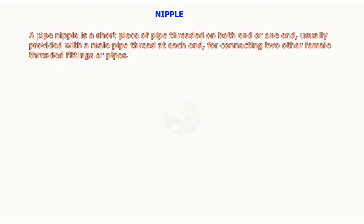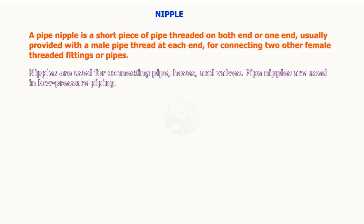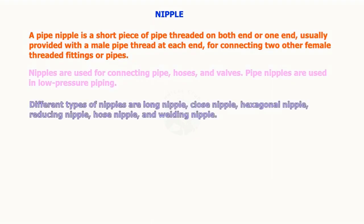A pipe nipple is a short piece of pipe threaded on both ends, or one end, usually provided with a male pipe thread at each end for connecting to other female threaded fittings or pipes. Nipples are used for connecting pipe, hoses, and valves. Pipe nipples are used in low pressure piping. Different types of nipples are: long nipple, close nipple, hexagonal nipple, reducing nipple, hose nipple, and welding nipple.